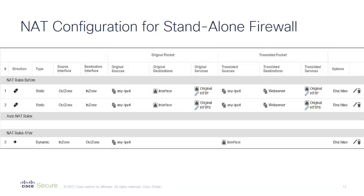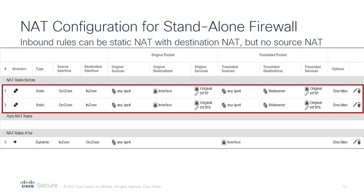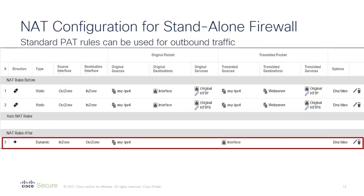Let's go through the NAT configuration on the firewall. Inbound traffic will be directed toward the outside interface IP of the firewall, so its destination must be replaced with the target server — in this case, the web server. For return traffic or outbound connections, you need to PAT every connection to the outside interface, so the source will be the IP address of the outside interface. This particular NAT statement is typical of any firewall deployment in any environment.